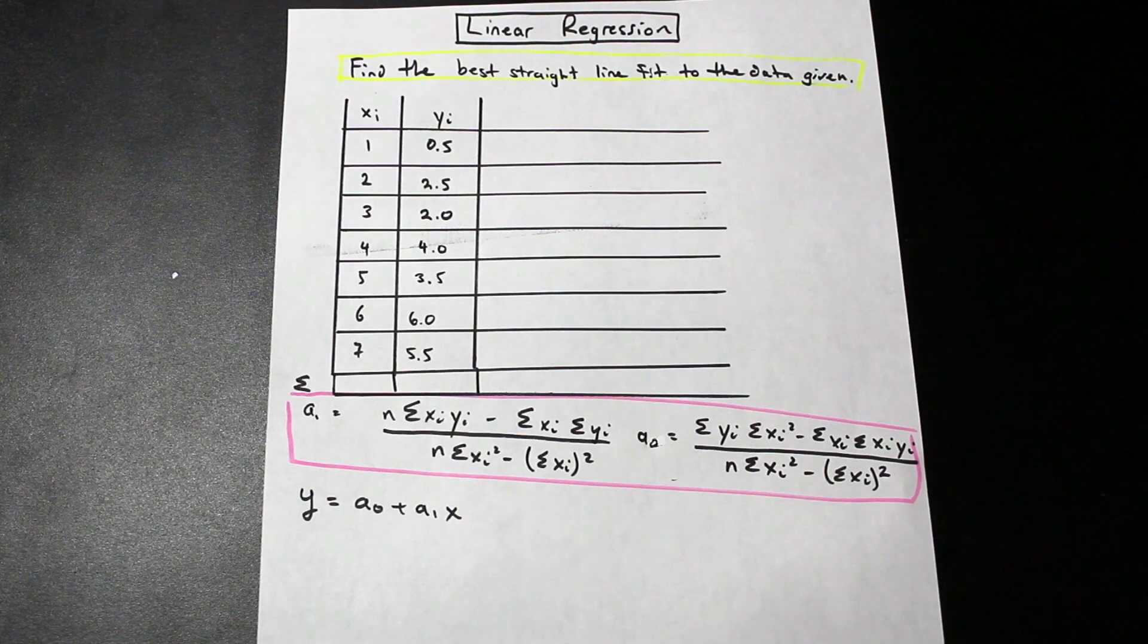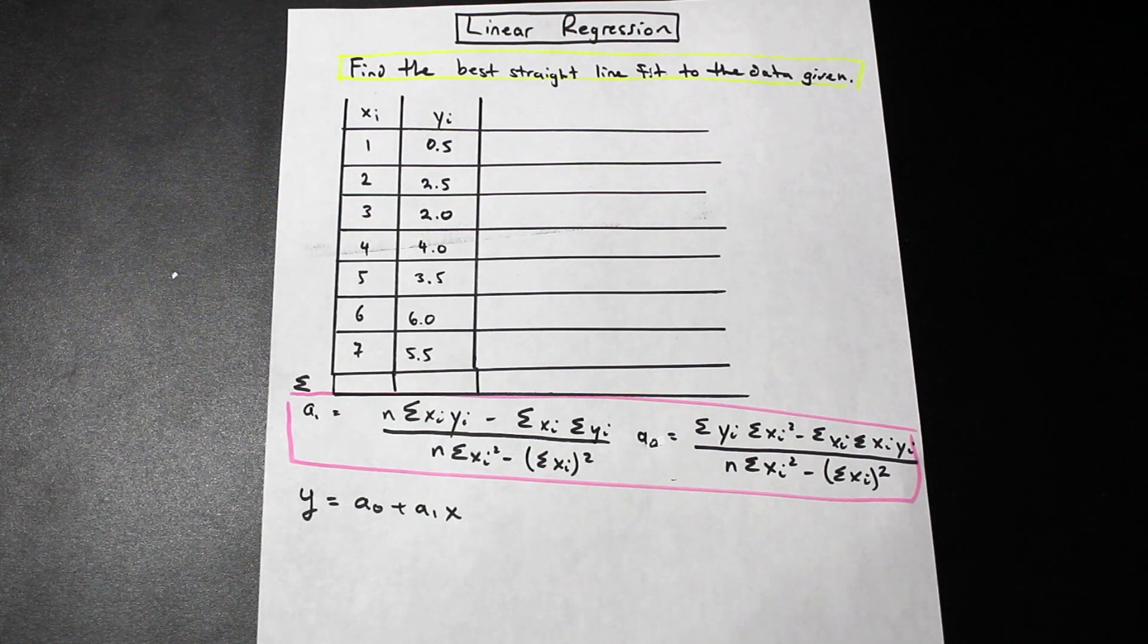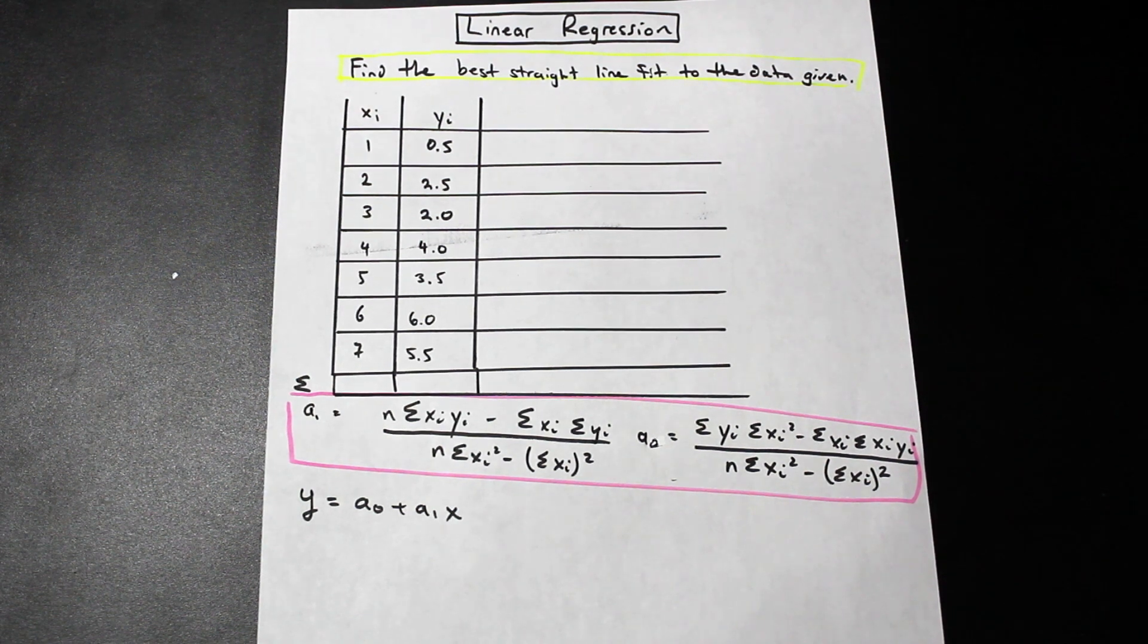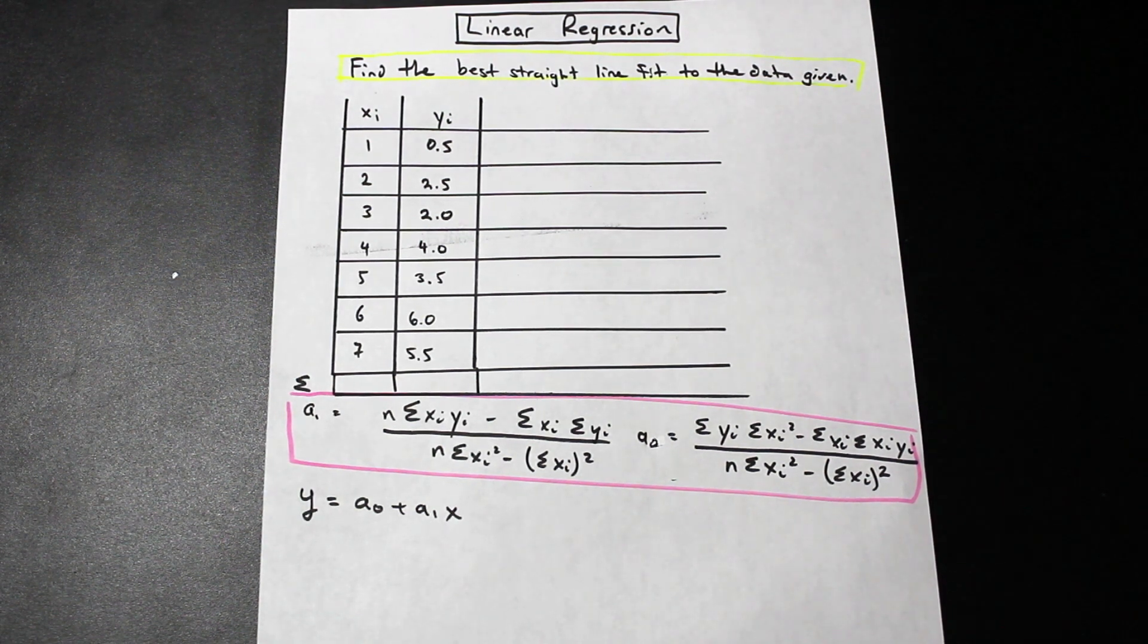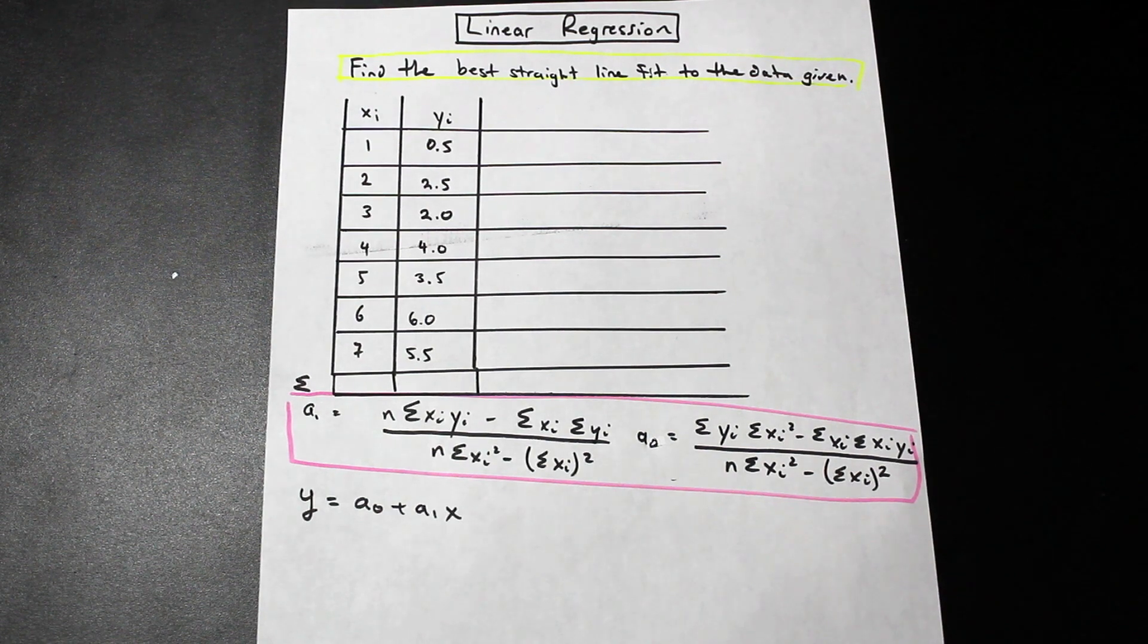Linear regression, essentially we are attempting to find the best straight line fit for a group of linear data, so linear relation. That's pretty much it.